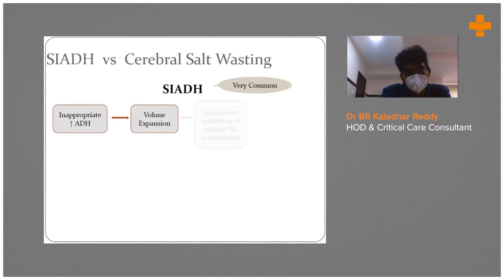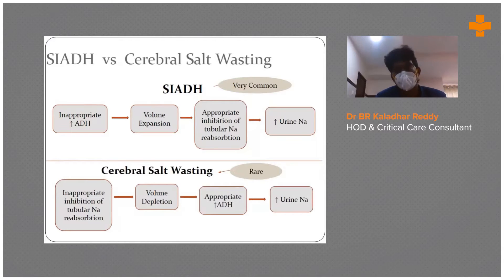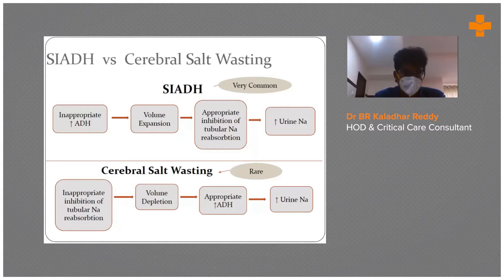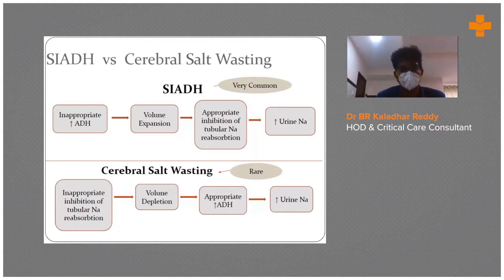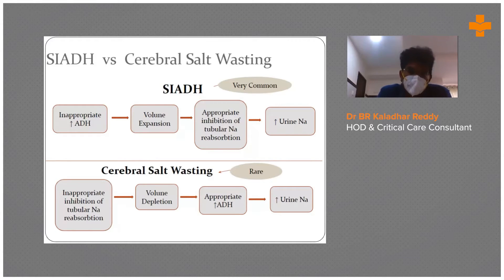The main problems we see here are SIADH and cerebral salt wasting syndrome, which commonly occur in a neuro intensive care unit. SIADH stands for syndrome of inappropriate antidiuretic hormone — an inappropriate increase in ADH leads to volume expansion, tubular reabsorption of sodium is inhibited, resulting in increased urine sodium. SIADH and cerebral salt wasting have almost all the same symptoms; the only difference is SIADH causes volume expansion whereas cerebral salt wasting causes volume depletion.